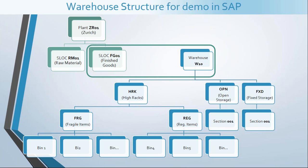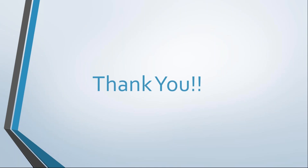With this we come to the end of the theory part. Let's discuss the example we would now create in the SAP system. At the top we have Plant Zurich, which has two storage locations: RM01 for raw material and FG01 for finished goods. The finished goods storage location needs to be warehouse-managed. This warehouse has three storage types: HRK, OPN, and FXD for High Rack, Open Storage, and Fixed Storage. The High Rack storage type has two sections: FRG and REG for fragile and regular items respectively. The other two storage types need their one mandatory storage section. Finally, for the fragile and regular sections under HRK, we will create the bins.